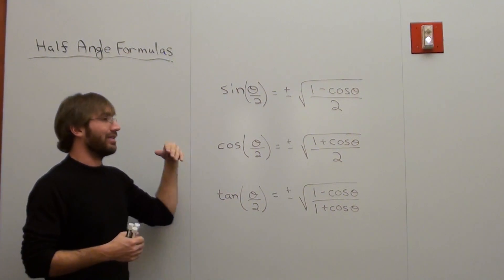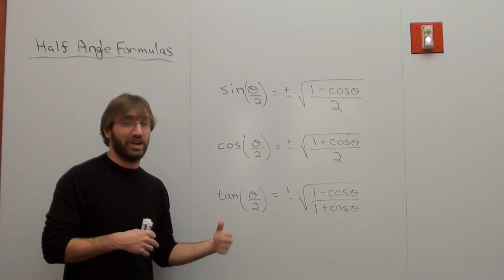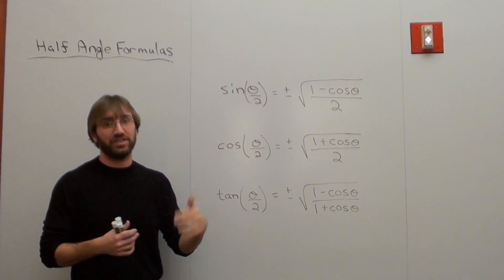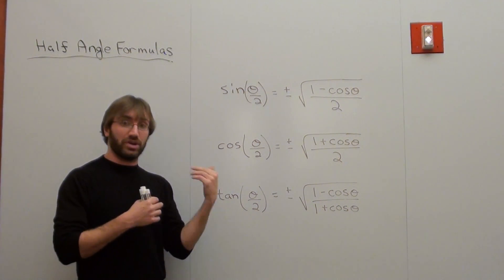When you're usually doing this, if you want to find the sine of 22.5, which is half of 45, or if you want to find the sine of 15 or cosine of 15, which is half of 30, they don't tend to be written very student-friendly.